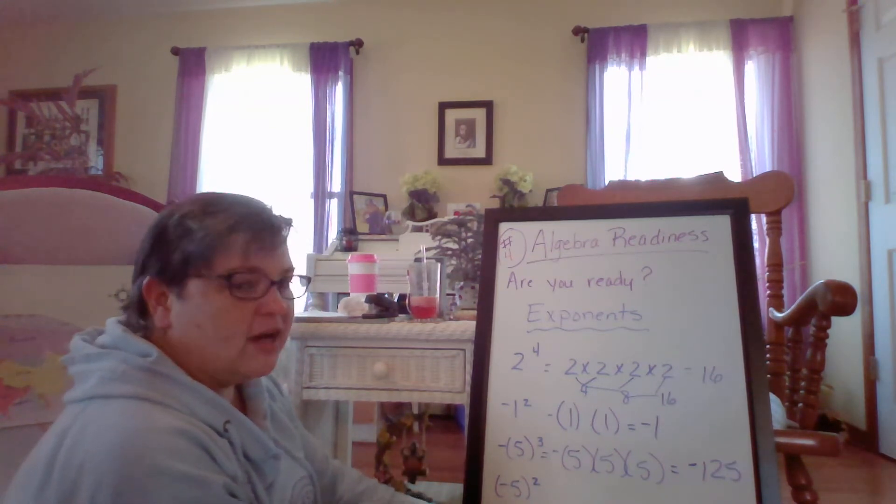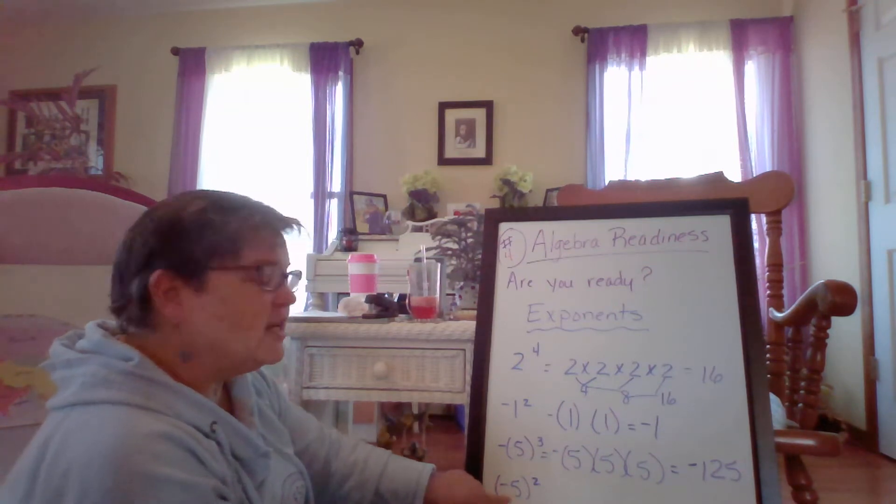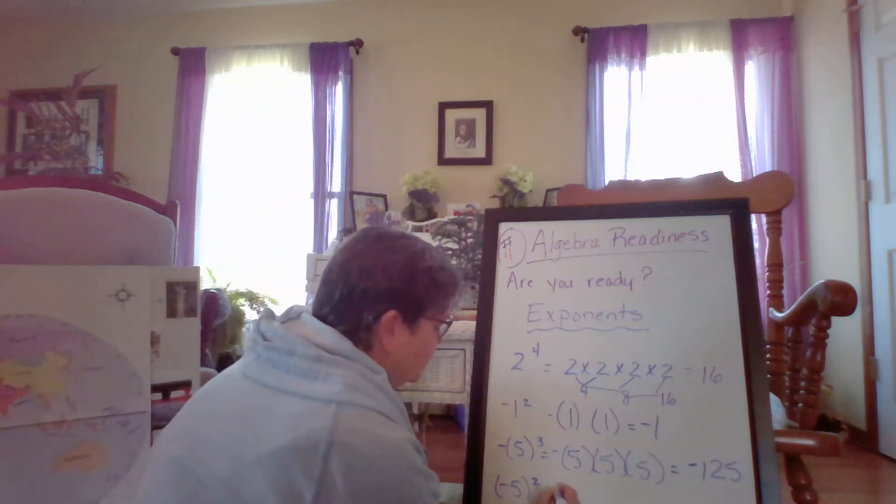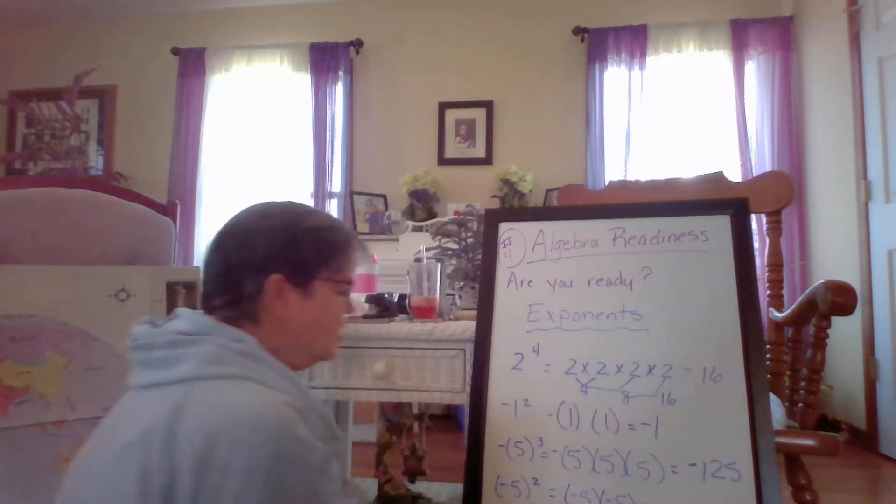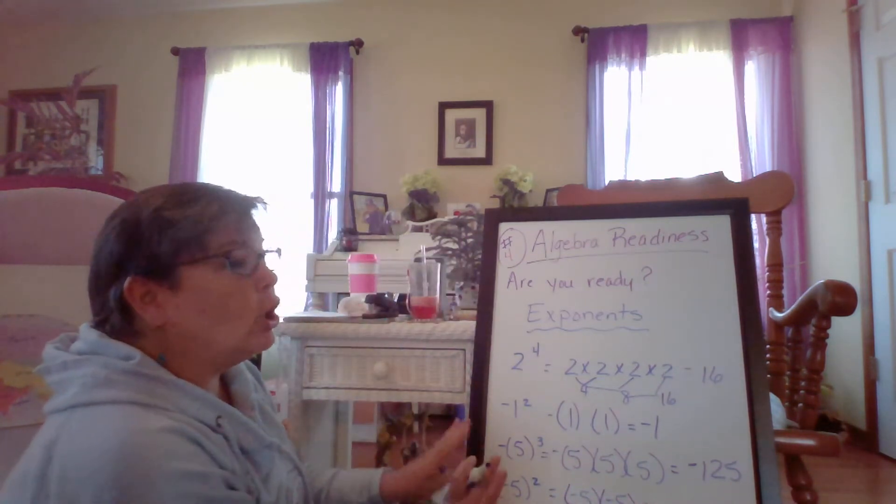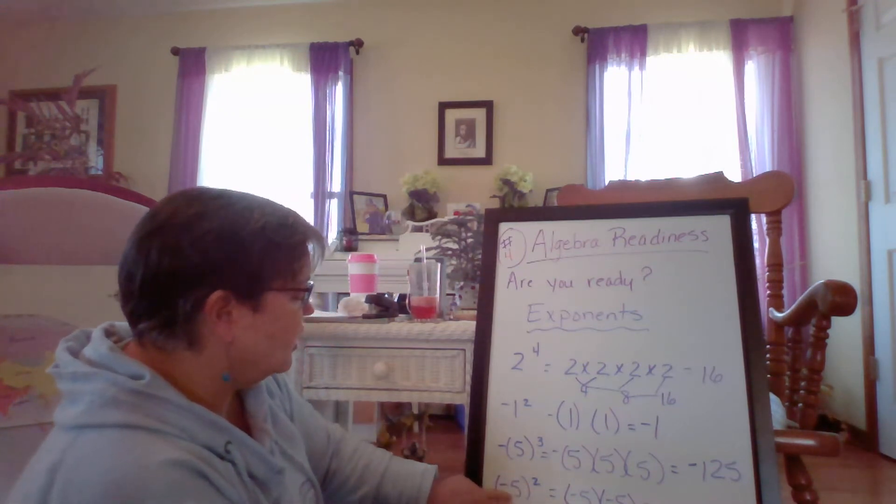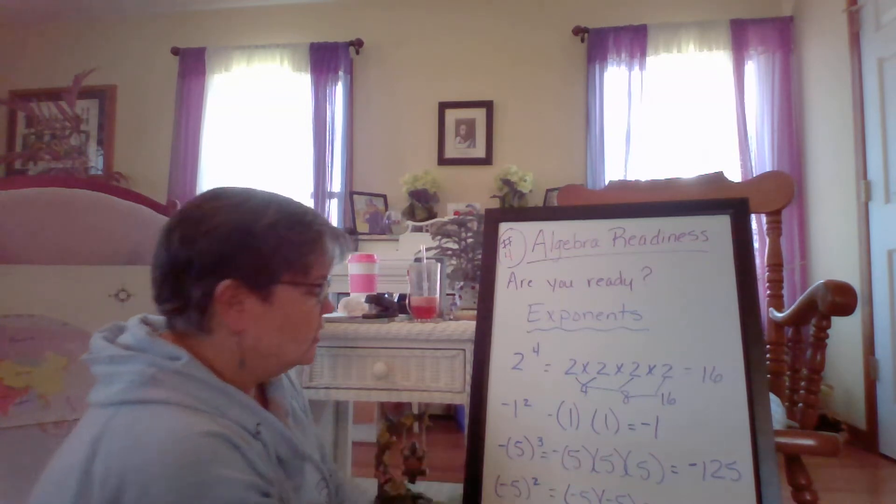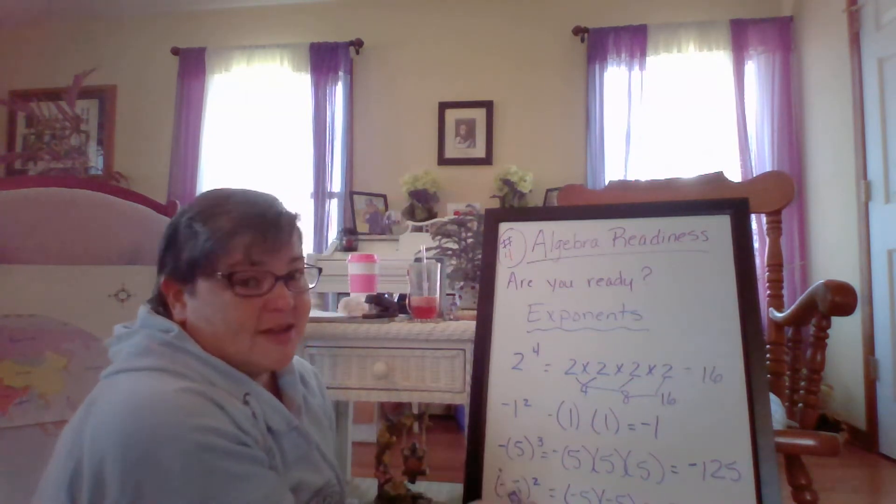Now pay close attention. We have negative five to, that is squared. And you're going to say, well, what is different? Because I'm going to show you now the negative is inside the parentheses. So now we're going to do negative five times negative five. We are not going to bring along the negative because it is part of what is being squared.